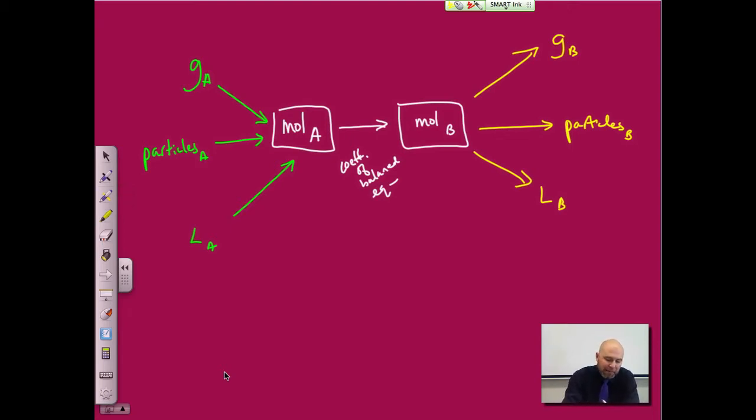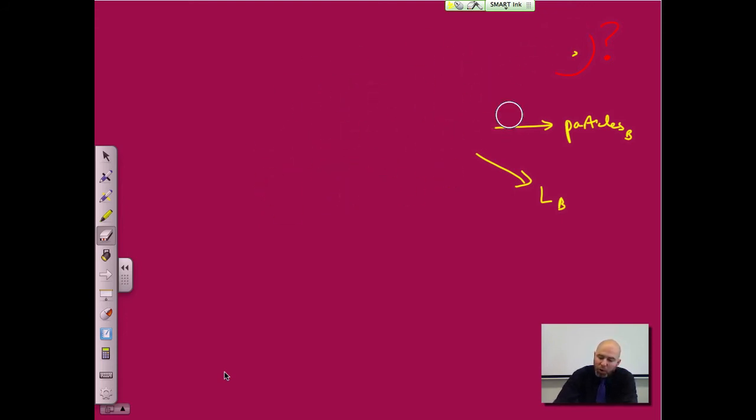Really if you're given the grams of one, you can determine how many grams of a second thing, your products or reactants or whatever. Again it would be a multi-step, one, two, and then three steps, so it'd be a three-step type of problem. But that's really all it is.